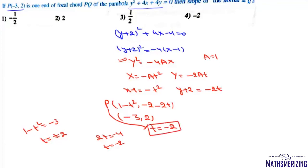Now for end points of focal chord we know that t1 into t2 is minus 1 so the other end of this focal chord will be simply minus 1 upon t which in this case is simply 1 by 2.